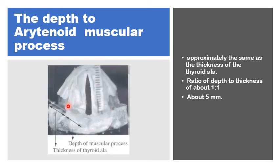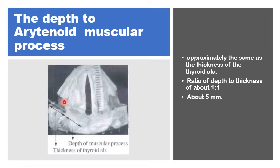How deep is the muscular process from the surface of the thyroid ala? About 10 millimeters. The thickness of the thyroid ala cartilage at this point posteriorly is about 5 millimeters, and a further 5 millimeters dissection in the paraglottic space would identify the muscular process. So the muscular process is about 5 millimeters from the inner table of the thyroid cartilage and about 1 centimeter from the surface of the thyroid ala.